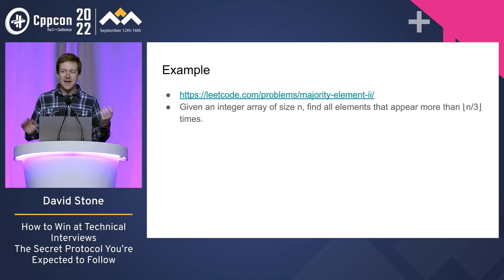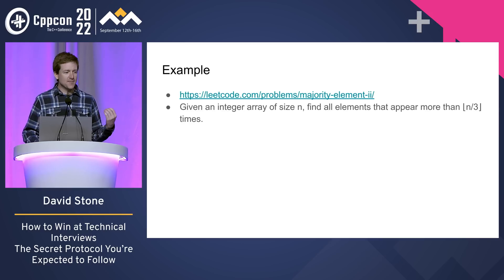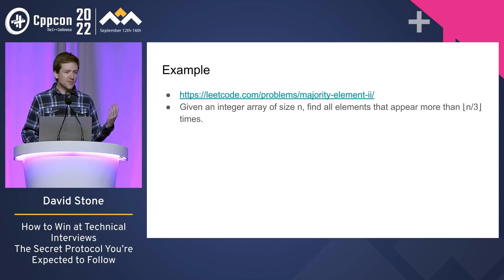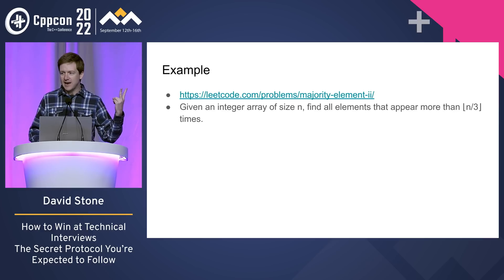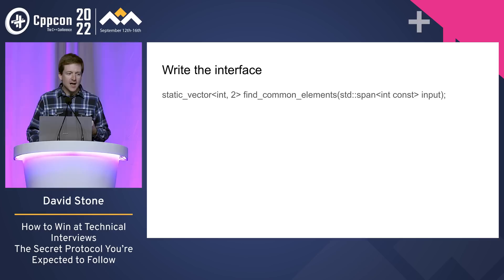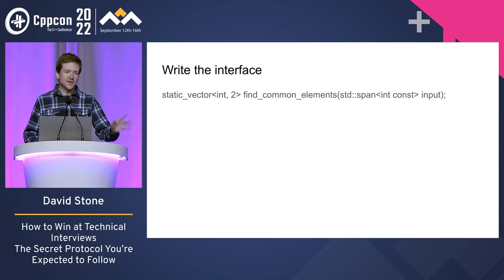Let's go through some examples. I picked this one completely at random — I went on LeetCode and said give me a random problem. This is a LeetCode medium. The problem is: given an integer array of size n, find all elements that appear more than n over three (rounded down) times. An interesting thing you might notice is that there can be at most two numbers in the array that have this property, because you can't have three things that are more than a third of all possible values. So this is the interface I ended up writing — it accepts a span and returns a static vector.